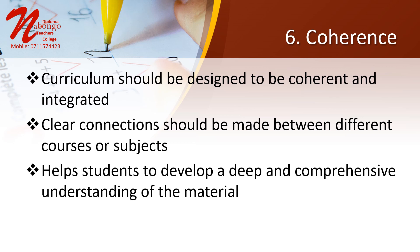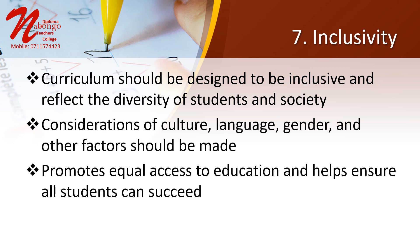Number 6: Coherence. The curriculum should be designed to be coherent and integrated, with clear connections between different courses or subjects. This helps students to develop a deep and comprehensive understanding of the material. Number 7: Inclusivity. The curriculum should be designed to be inclusive and should reflect the diversity of the students and the society in which they live. This includes considerations of culture, language, gender, and other factors that may impact student learning.